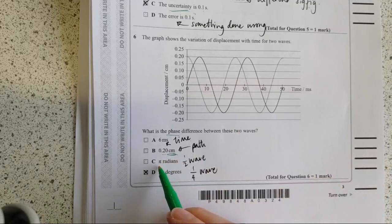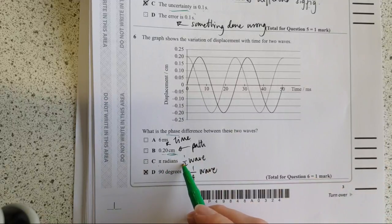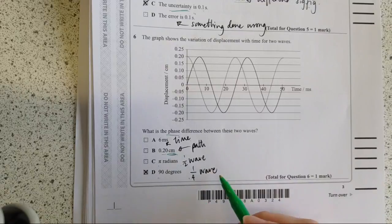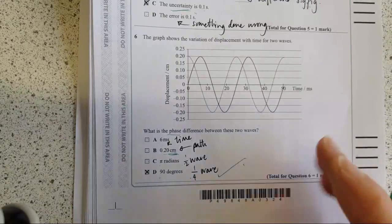This is a half a wave, so there's two pi radians in every full wave cycle. So the only one that makes any sense is this one, which is a quarter of a wave here. Moving on.